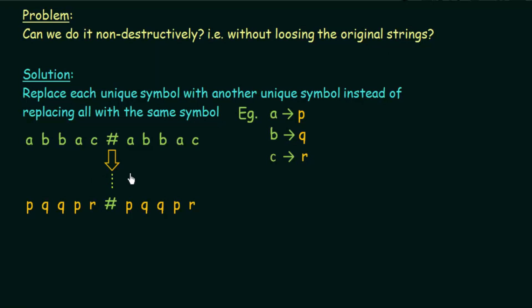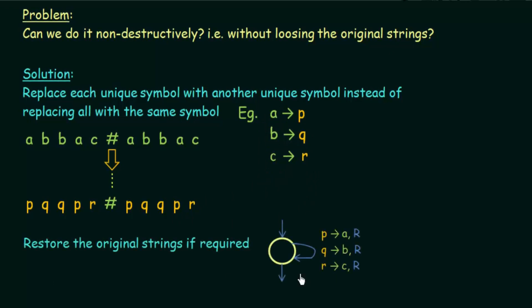The steps are similar to before — scanning each symbol step by step. In the final step, a is replaced with p, b with q, a again with p, c with r, and the same goes for the second half after the hash. To retain the original string, we restore it by replacing p, q, r back with a, b, c. We can do this with a single state: if there is a p, replace it with a and move right; if there is a q, replace it with b and move right; if there is an r, replace it with c and move right. In this way, the symbols are restored to the original.